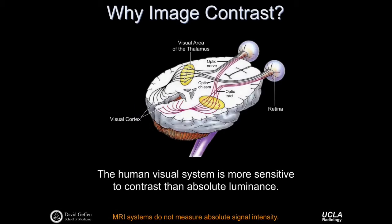Image contrast. Why do we care about image contrast? Well, it turns out that the human visual system is much more sensitive to contrast, that is, differences in signal intensities between adjacent regions or tissues, than we are to absolute luminance. That is, MRI systems do not measure absolute signal intensity very well. At the end of the day, what we ultimately have is voltage signals that we transform into images, wherein the contrast information is especially valuable.